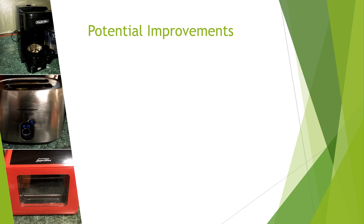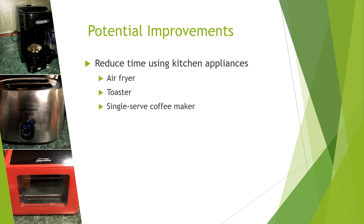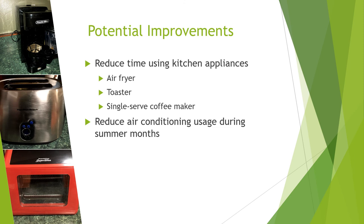Some potential improvements for my energy usage include reducing the time I'm using kitchen appliances or using them more efficiently. This was especially seen during the measurements of the air fryer, toaster, and single serve coffee maker. Although it isn't summer right now, I can anticipate my air conditioning usage will increase in the coming months, so another improvement will be to minimize my plug-in air conditioner usage. Finally, I could purchase high quality energy efficient light bulbs, as I've been using older bulbs brought from home on a college budget.